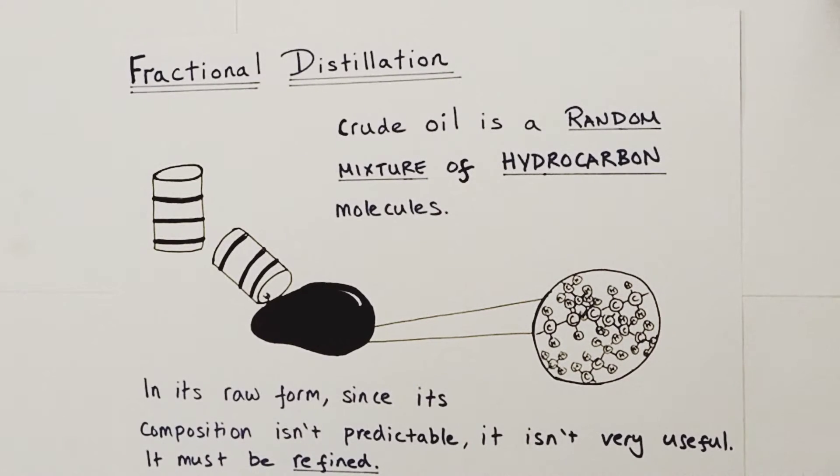Hi there, welcome to this Alchemist chemistry video looking at the industrial process of fractional distillation. Fractional distillation is a way of making crude oil more useful to us. First, I'm going to focus on exactly what crude oil actually is.